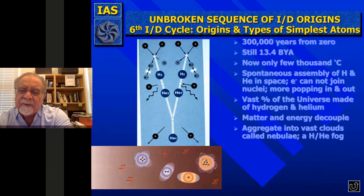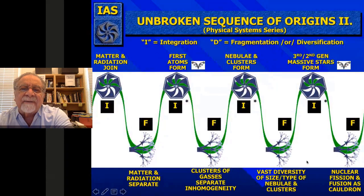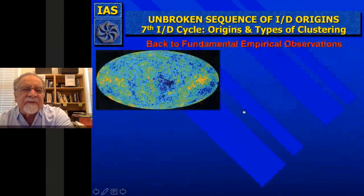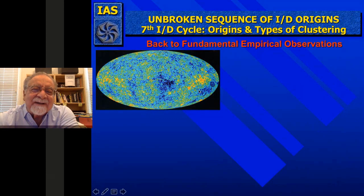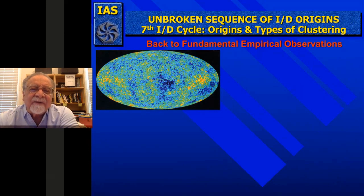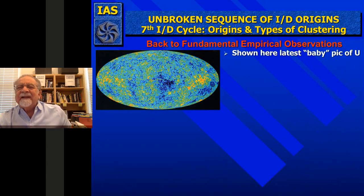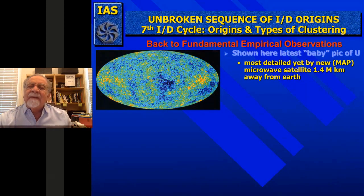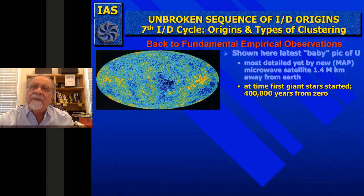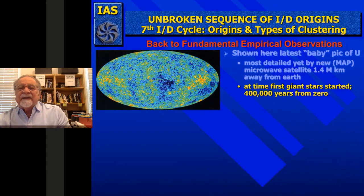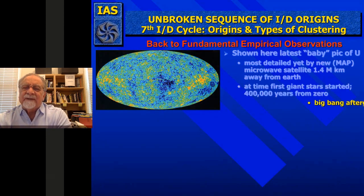A lot of research has been done since the first background radiation images. This is the more modern, most detailed baby picture of the universe we can see—by microwave satellite in a stable orbit away from Earth. It's far more clustered and fine than early images. This is at the time when the first giant stars started, about 400,000 years from zero.